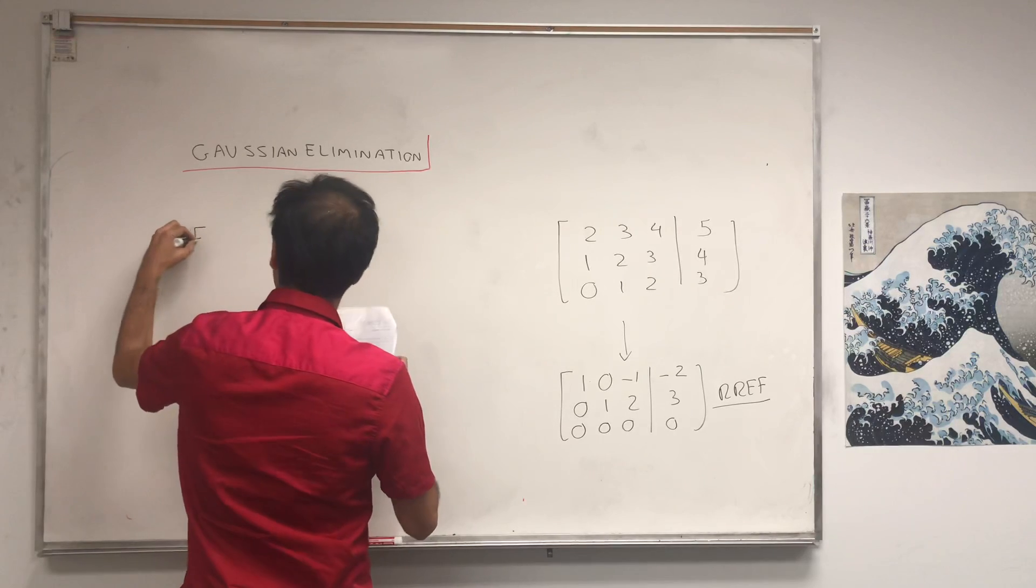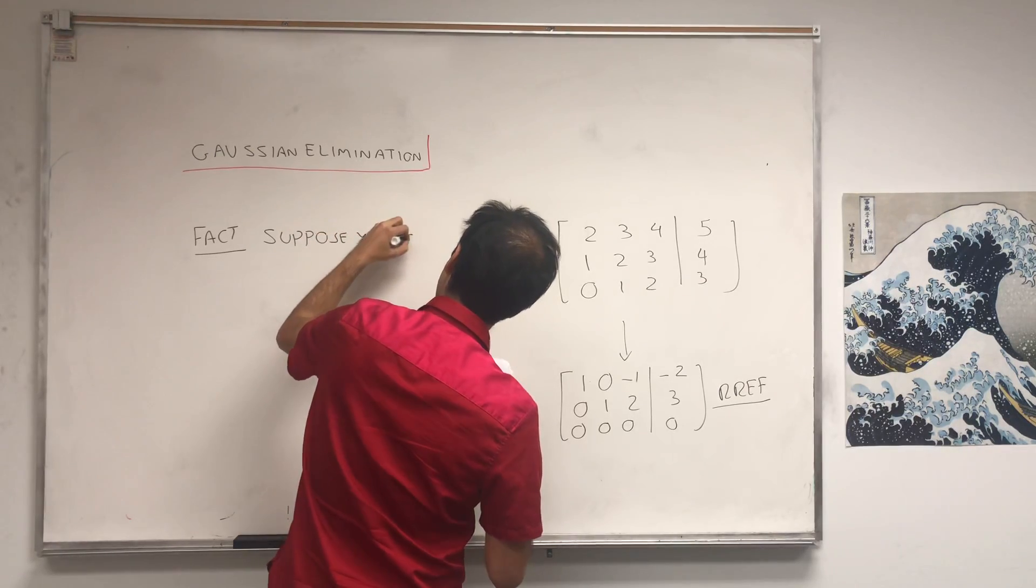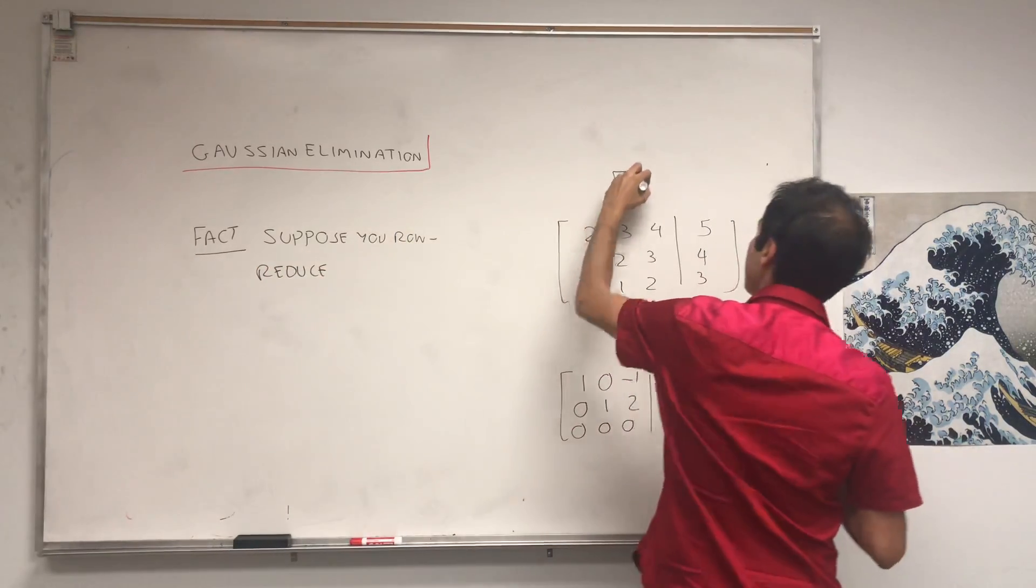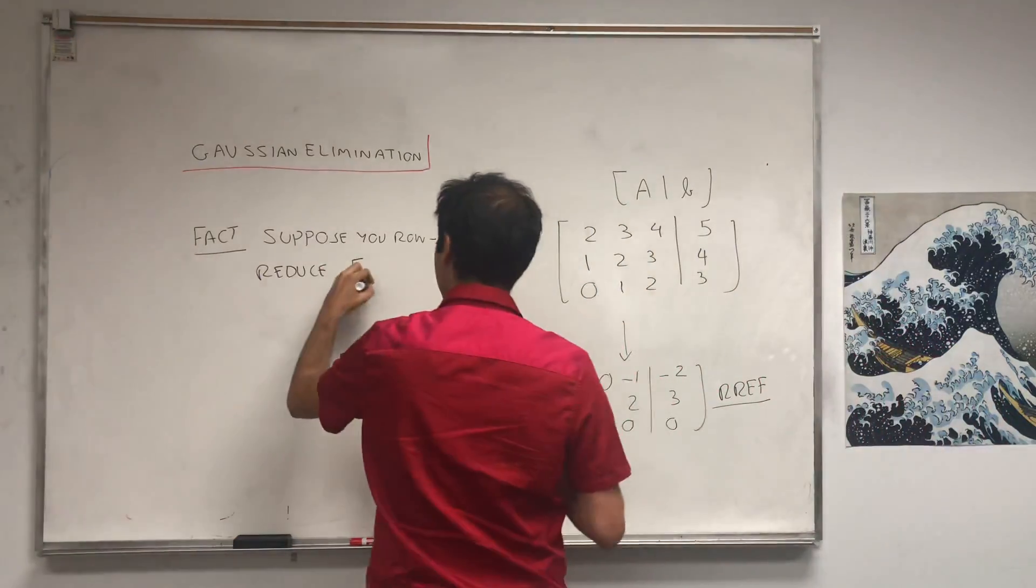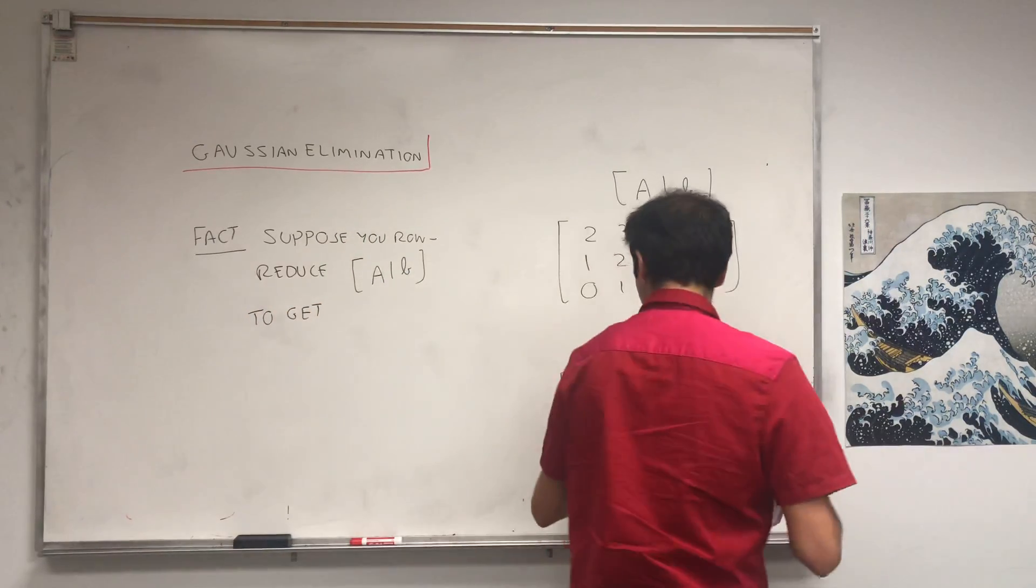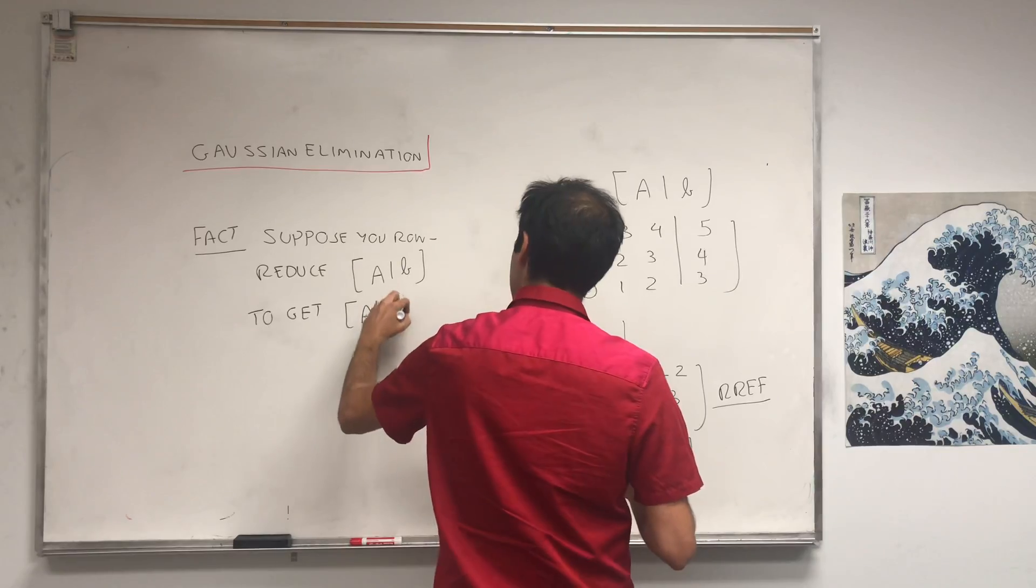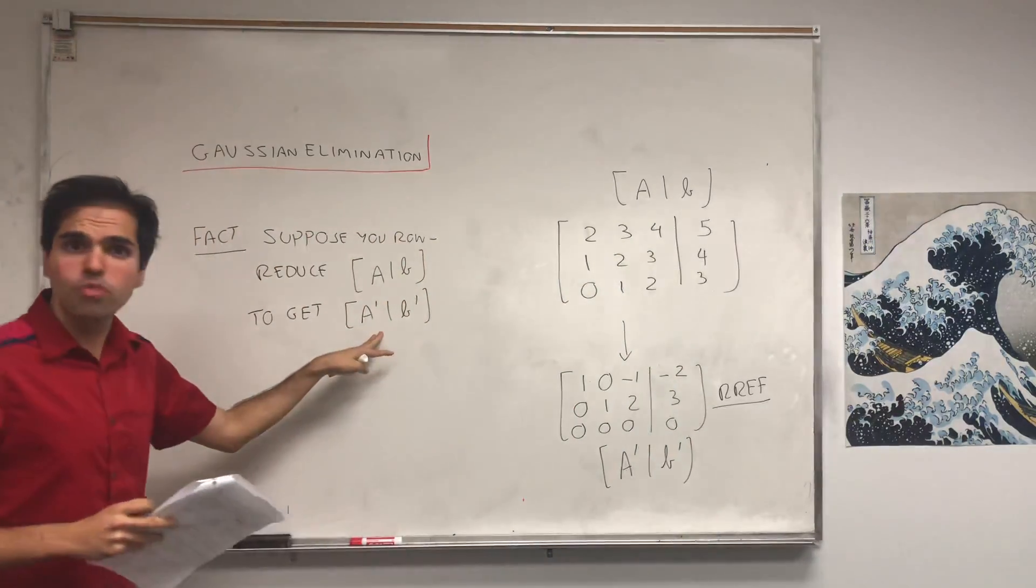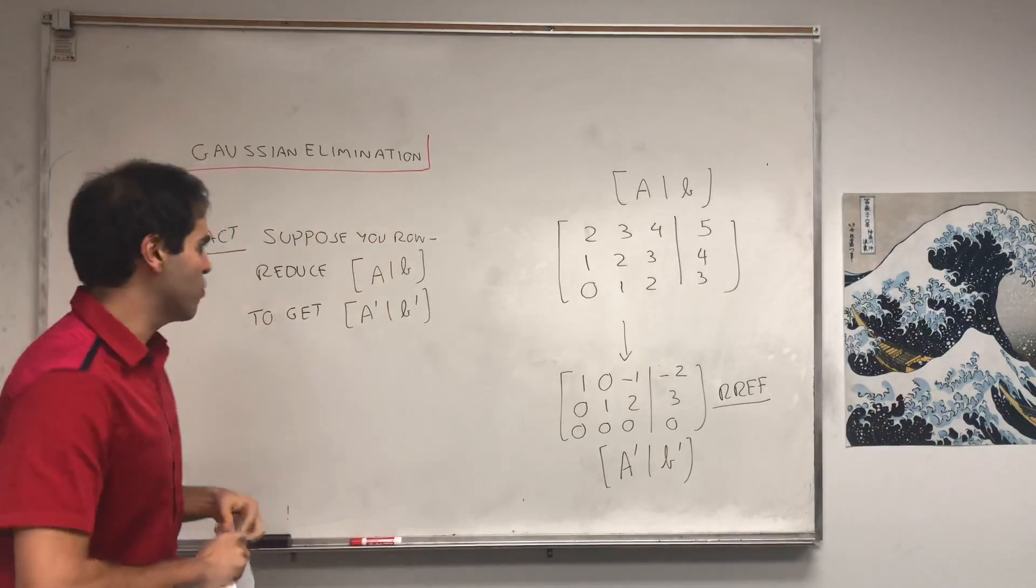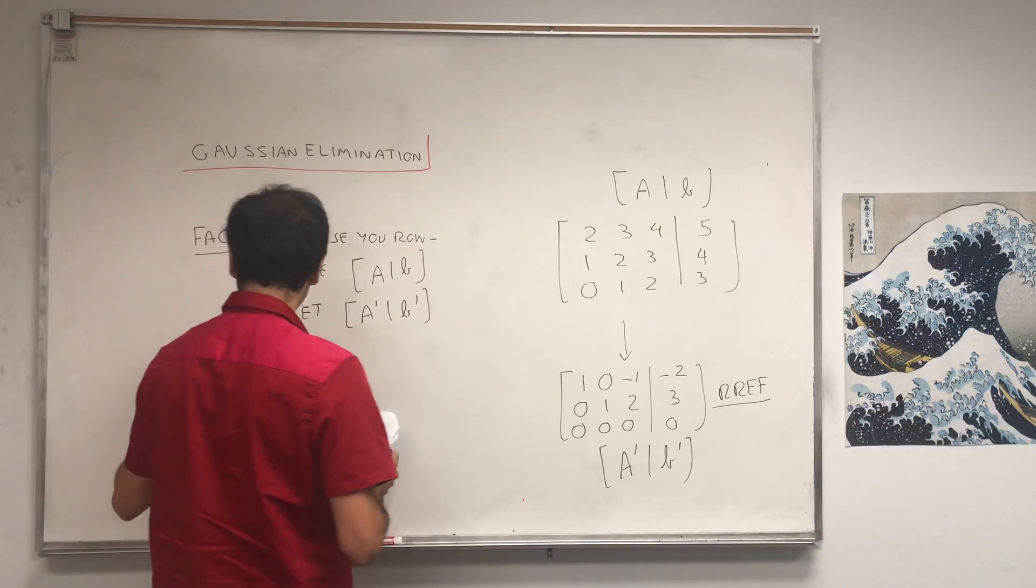The reason why we're here today is to see why, first of all, we don't lose or add any solutions. How come that using the row reduction, we get the exact same solutions as we started and the same solutions that we had. And in fact, let me prove this statement. So fact: suppose you row reduce, let's call this matrix A, B, the augmented matrix, to get this new matrix, let's call it A prime and B prime.